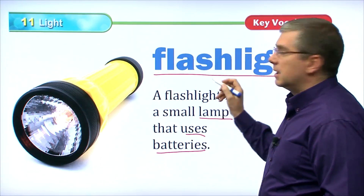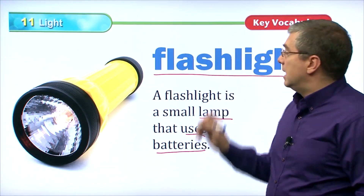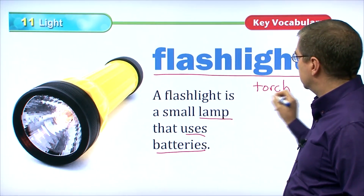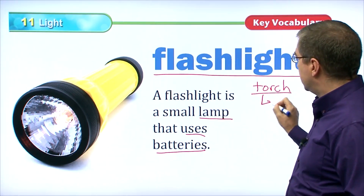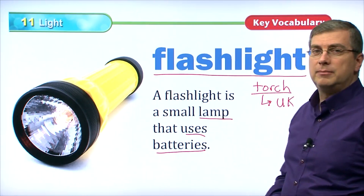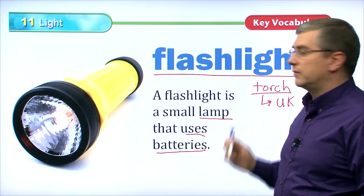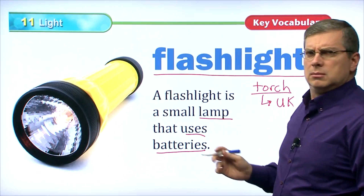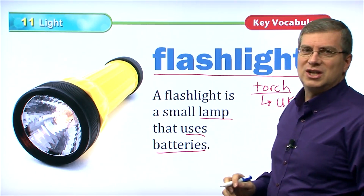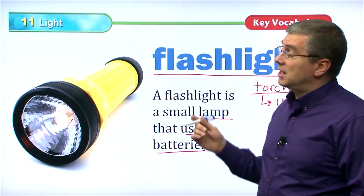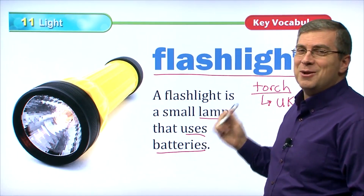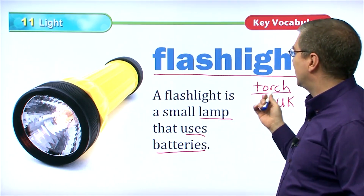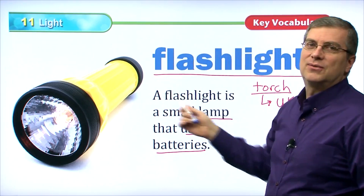By the way, just so you know, in the United Kingdom, in England, they don't say flashlight. They call it a torch, which is interesting. People from the United Kingdom will call it a torch. So if you go to England, Ireland, or Scotland, don't call it a flashlight — they may not know what you mean. Call it a torch instead. But if you go to America, don't say you want a torch, because in America a torch is a piece of wood that burns. In the United Kingdom, a torch is a flashlight. In America, say it's a flashlight.